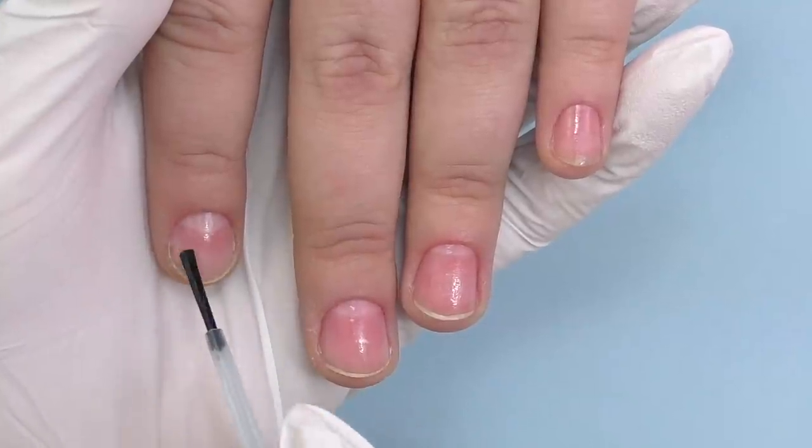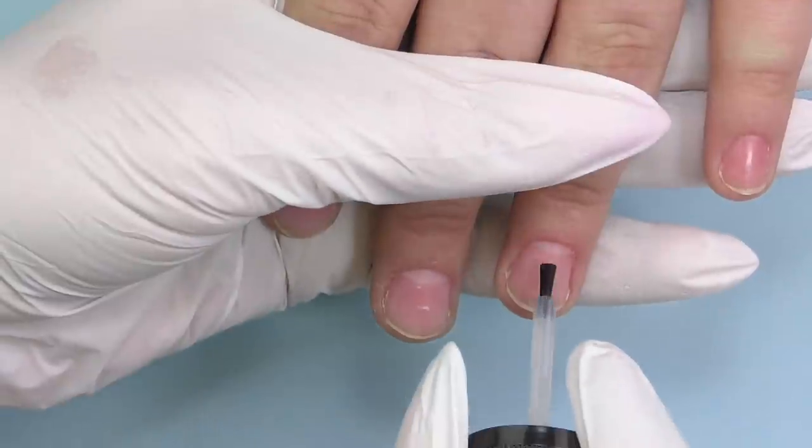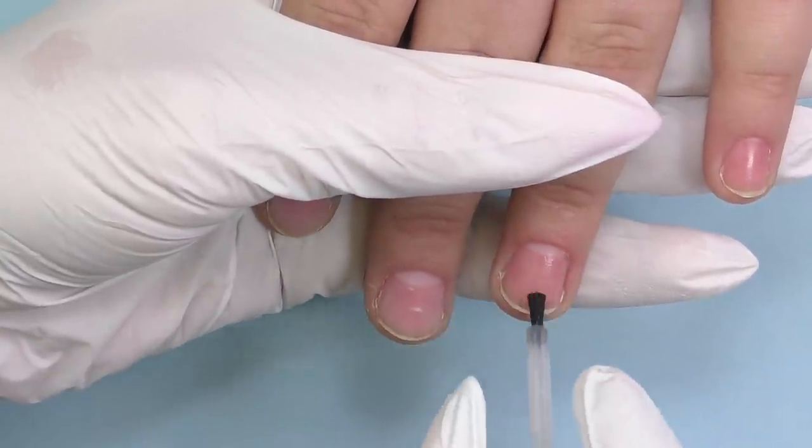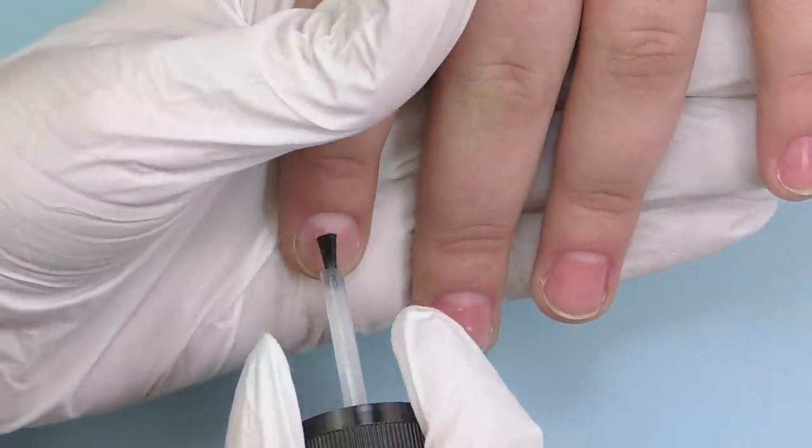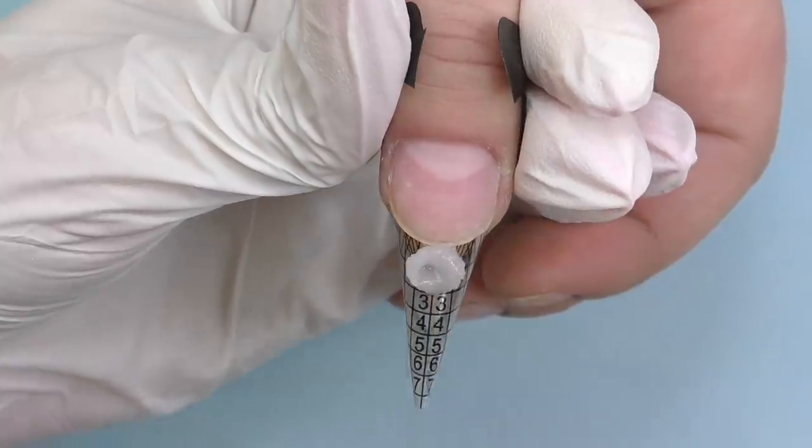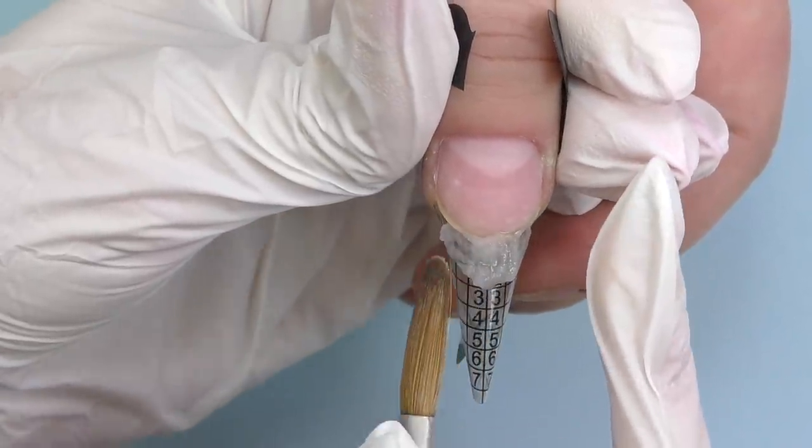And then I'm going to apply a dehydrator on the entire nail plate. Always let dry because with some clients it is going to take a while, maybe like a minute or two. So just let it dry. And I decided to use acid primer. You can use it whenever you use any kind of acrylic system, but do not apply too much and also make sure that it is completely dry before you continue.